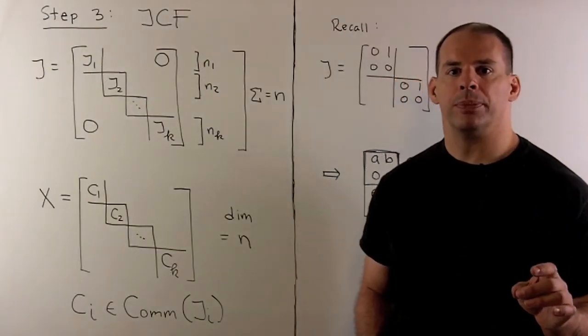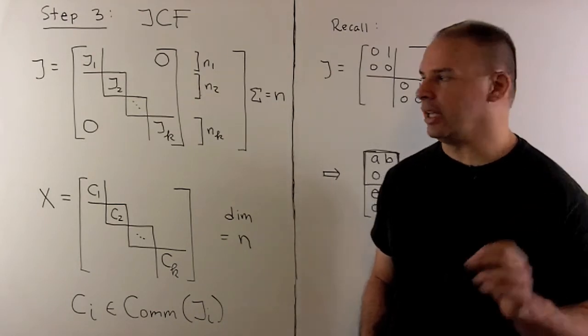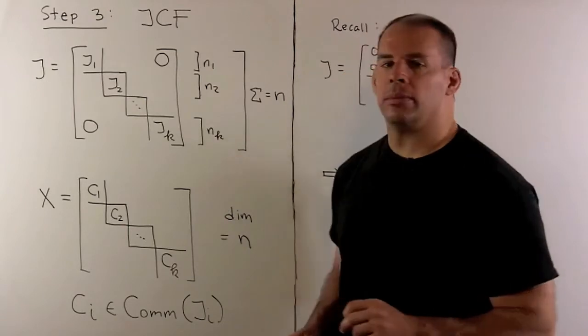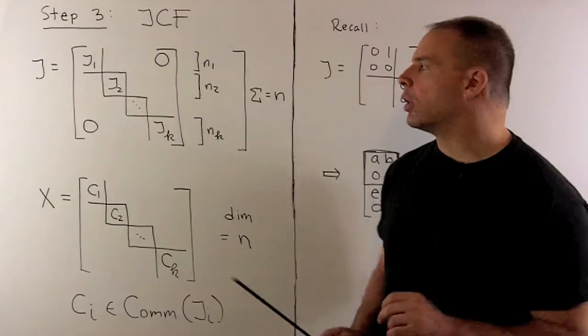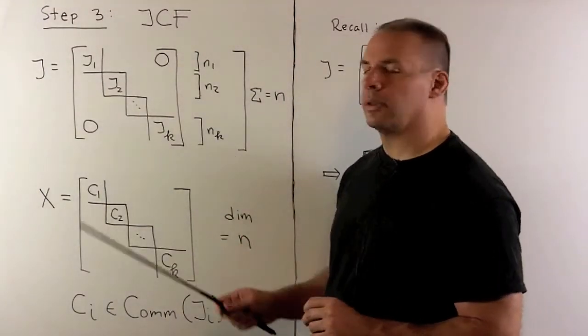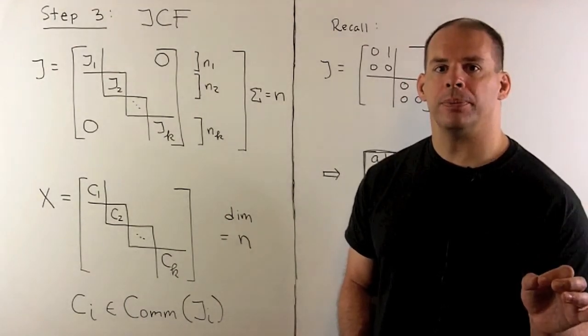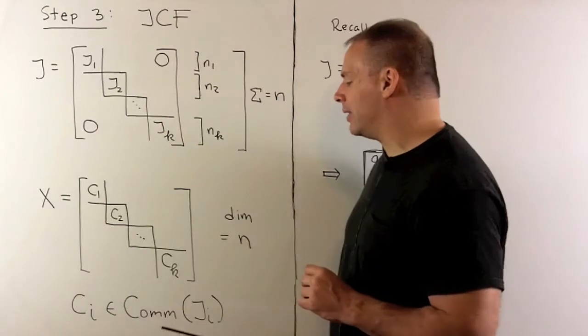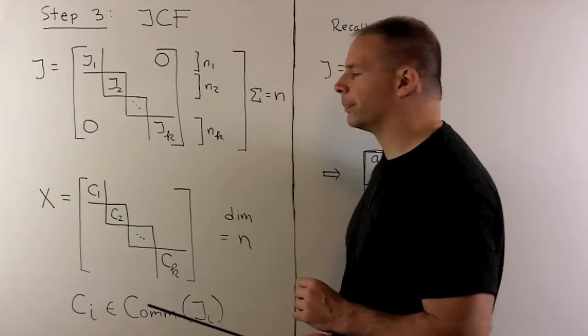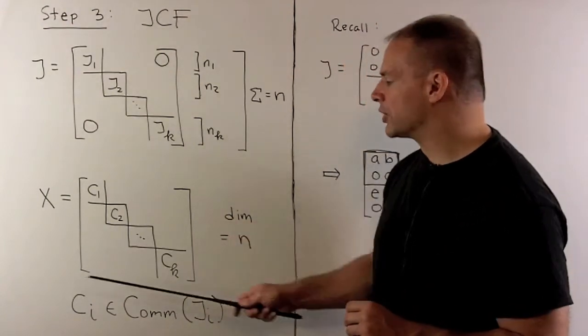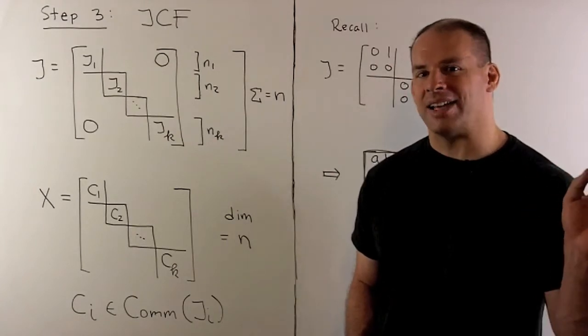Getting back to our problem, we assume that our matrix J is in Jordan canonical form. That means J is block diagonal. The diagonal blocks are Jordan blocks J sub I, and we have zeros off the main diagonal. Now, a recipe for constructing elements in the commutant of J: For each I, we'll choose a C sub I in the commutant of J sub I, and we form the following block diagonal matrix.